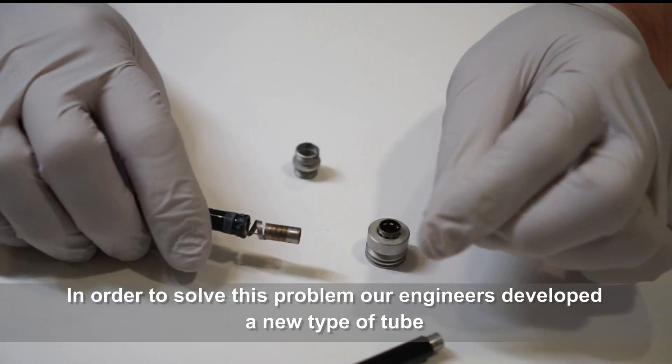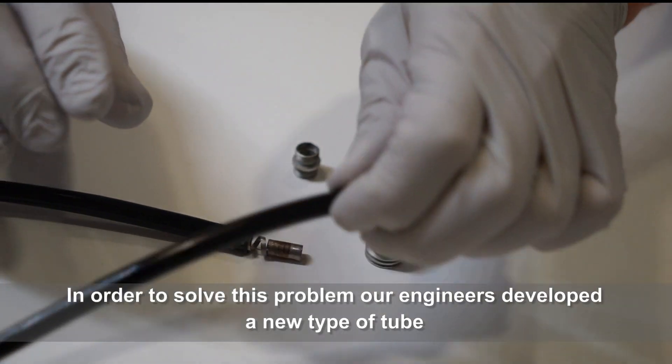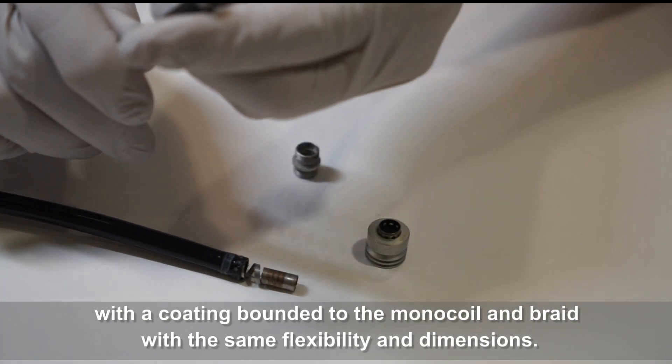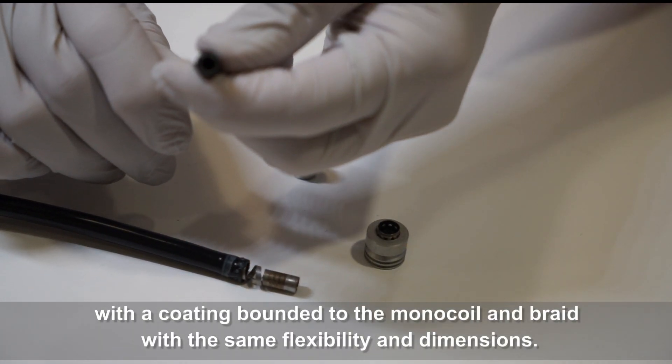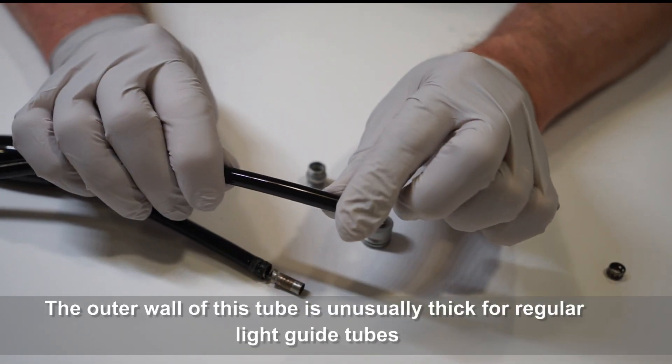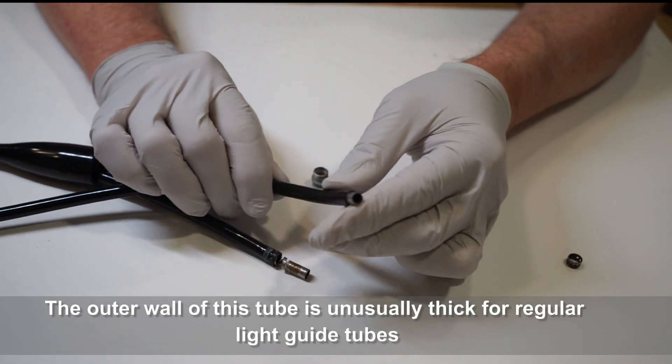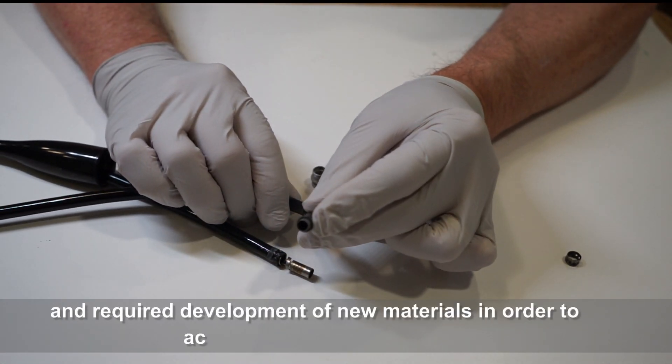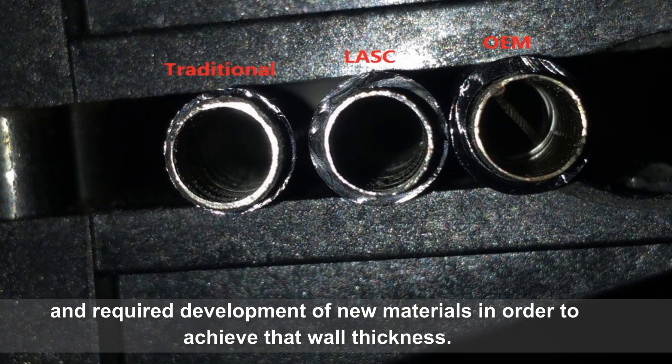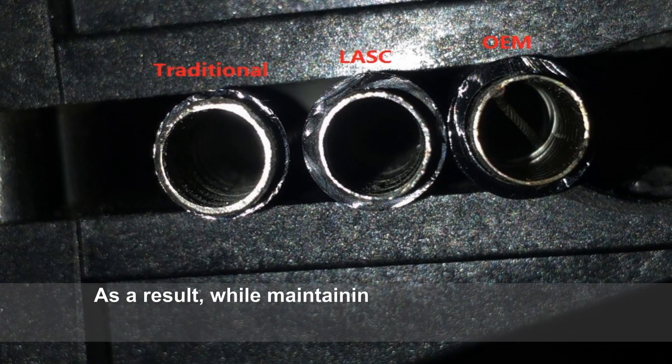In order to solve this problem, our engineers developed a new type of tube with a coating bonded to the monocoil and braid with the same flexibility and dimensions. The outer wall of this tube is unusually thick for regular light guide tubes and required the development of new materials in order to achieve that wall thickness.